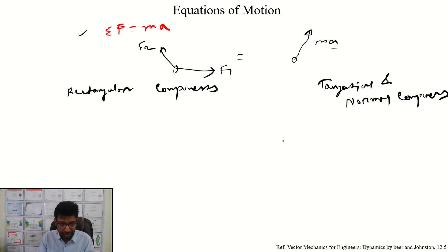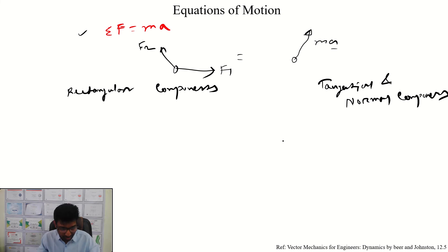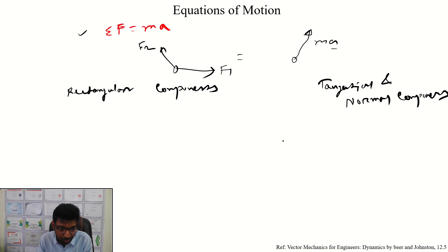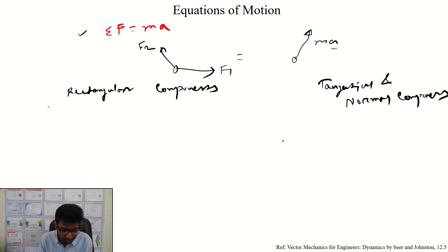This is a simple example of the summation of force, which is F. In the 3D coordinate system, X, Y, and Z give us three components — that is what the rectangular component is all about. We write the summation of forces in terms of Fx, Fy, and Fz.